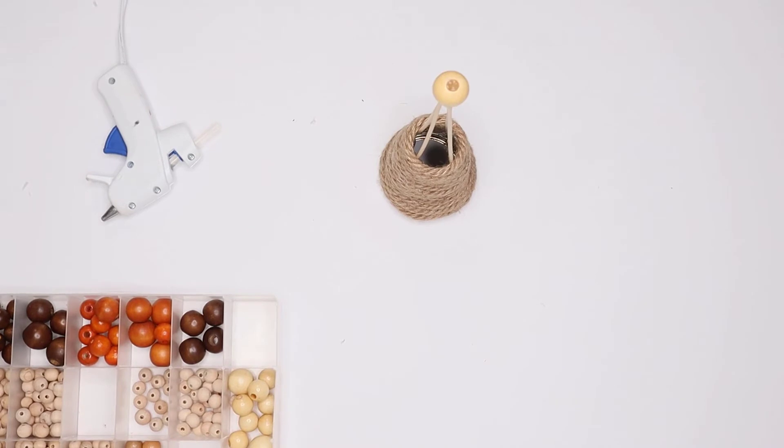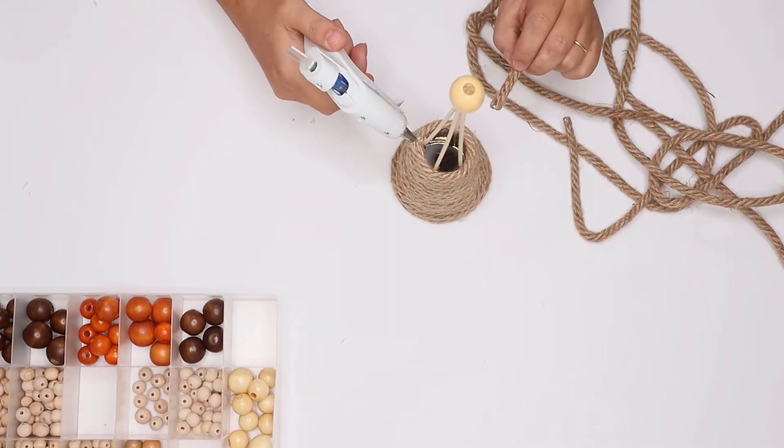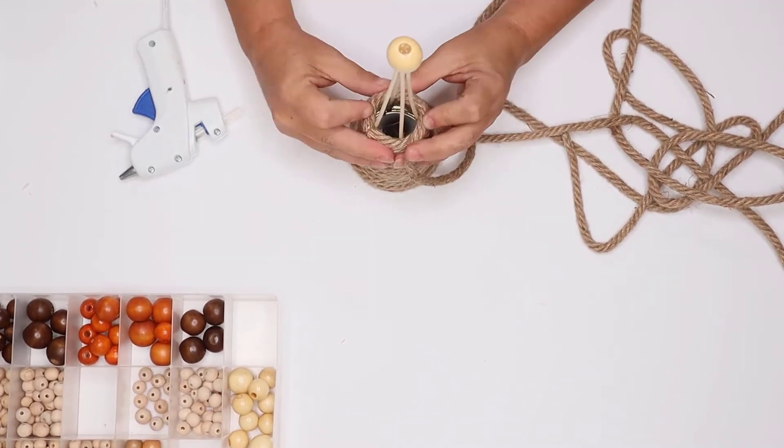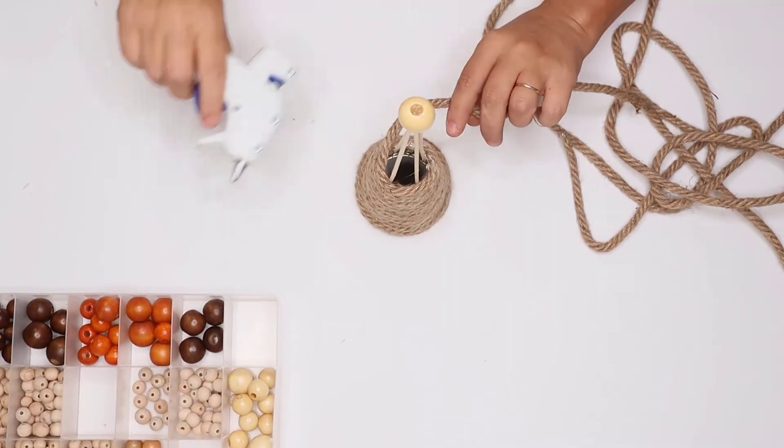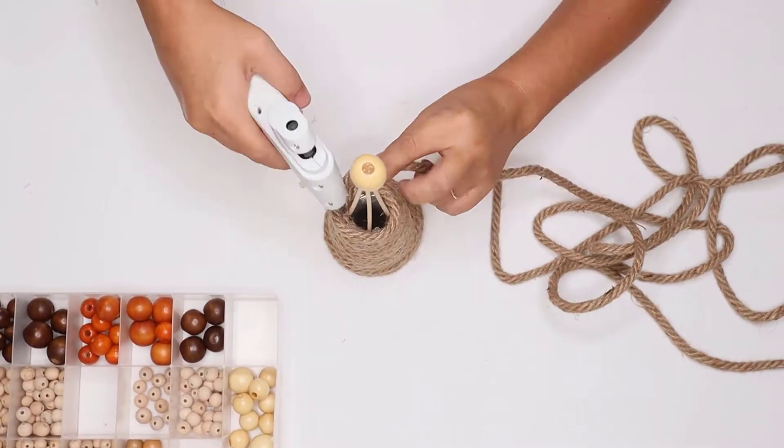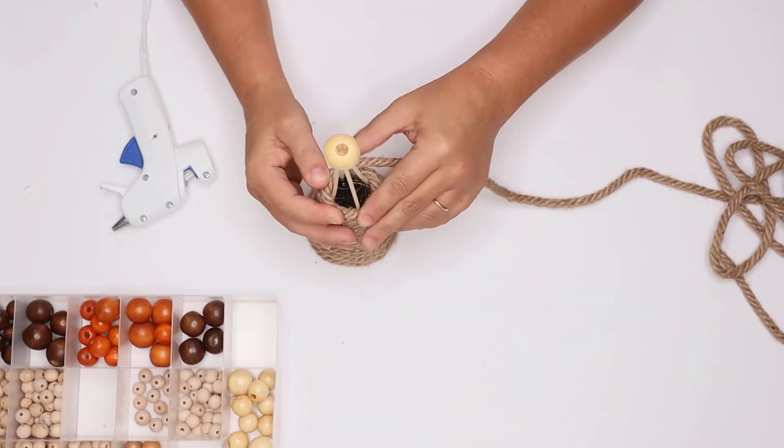I had to use two packages of the rope from Dollar Tree to completely wrap the tree. You could make the tree shorter by simply clipping the skewers shorter and only use one rope.